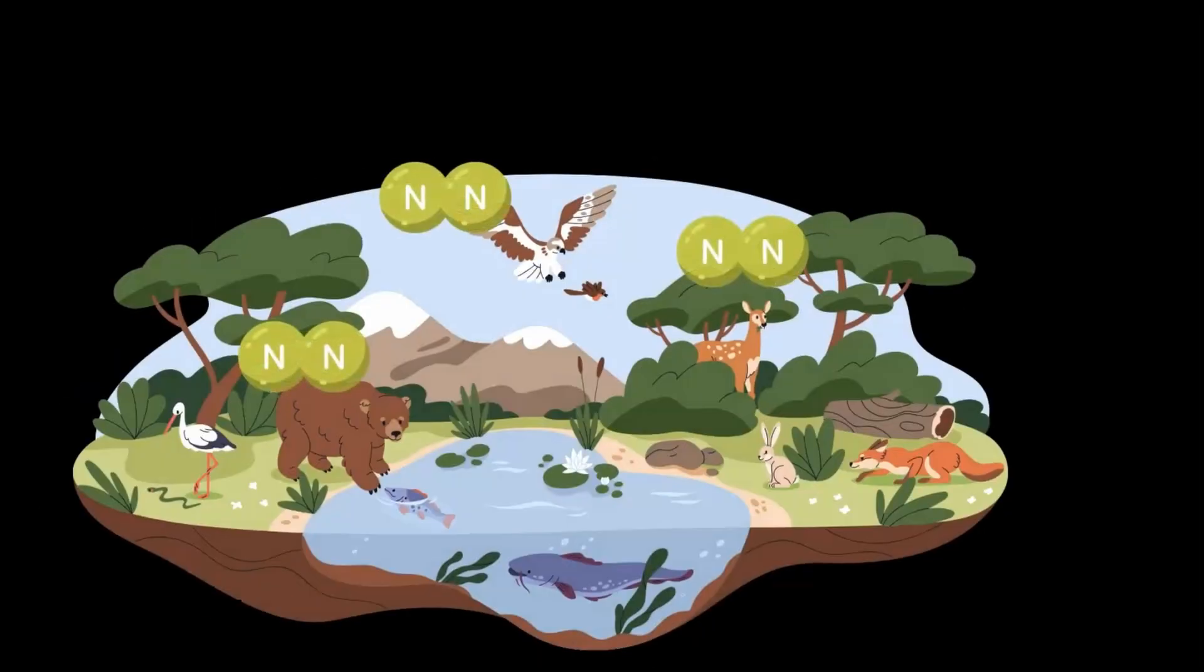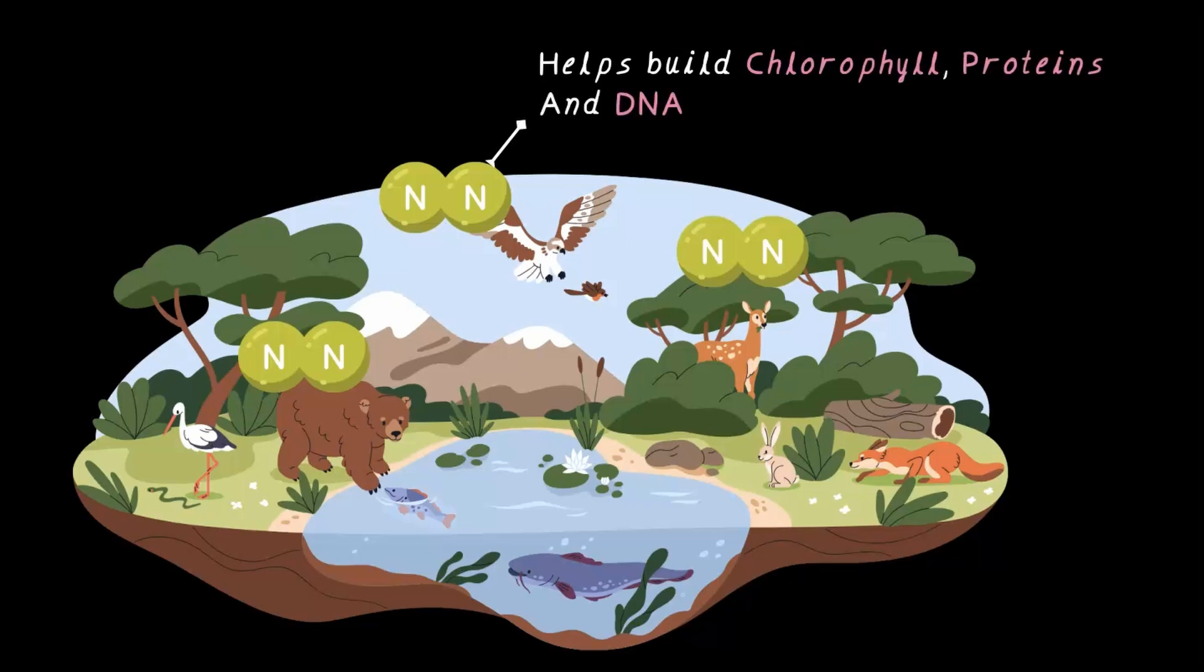All right, so here is the deal. Plants and animals need nitrogen to survive. It is an important element of life. Nitrogen helps build chlorophyll, proteins, and DNA. Remember chlorophyll? The necessary component for photosynthesis. Photosynthesis is the process where plants make food from sunlight. Yes, that's the chlorophyll.